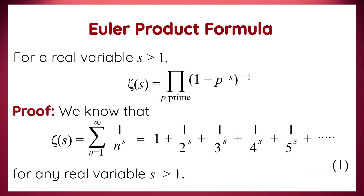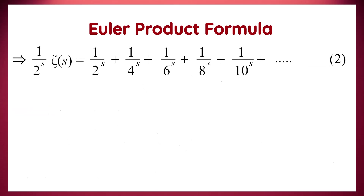To prove this, let's begin with the definition of the zeta function for a real variable s greater than 1. The first step is to multiply the zeta function by its second term, that is, 1 over 2 to the power s. This gives: 1 over 2 to the power s times zeta(s) equals 1 over 2 to the power s, plus 1 over 4 to the power s, plus 1 over 6 to the power s, and so on.